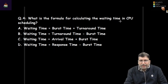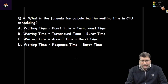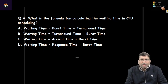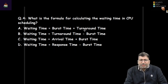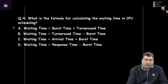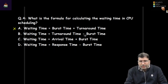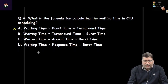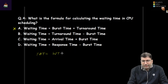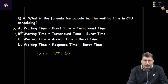Next question: what is the formula for calculating waiting time in CPU scheduling? Option A says burst time plus turnaround time — this is false, because turnaround time already includes waiting time plus burst time, so that would double-count. The correct answer is B: waiting time equals turnaround time minus burst time.